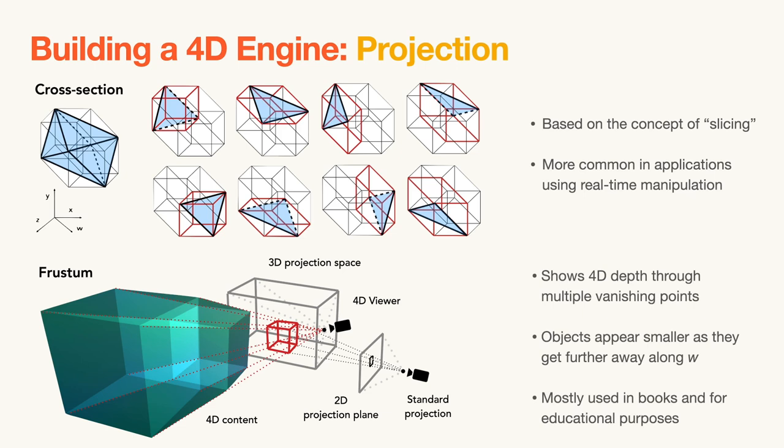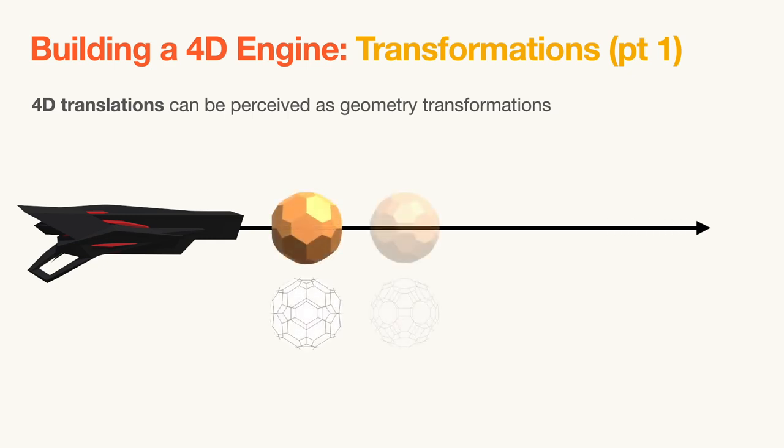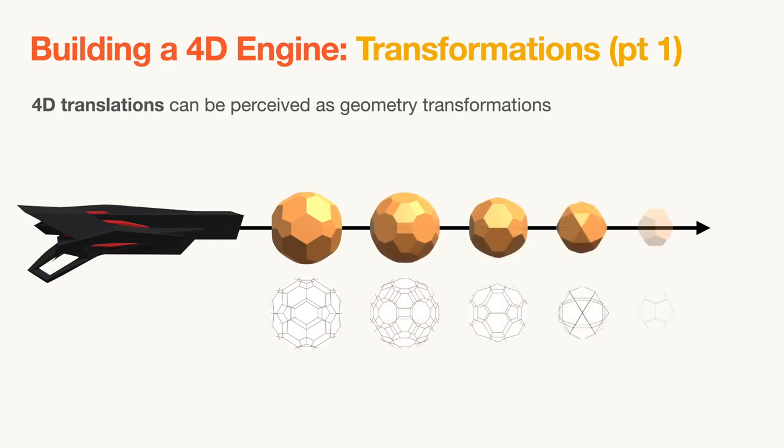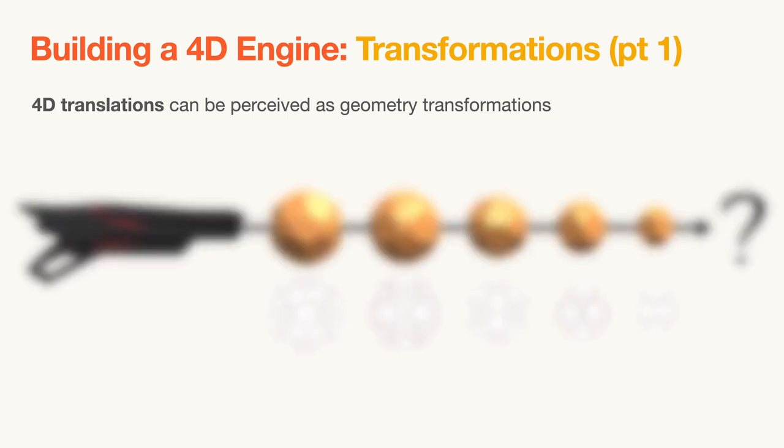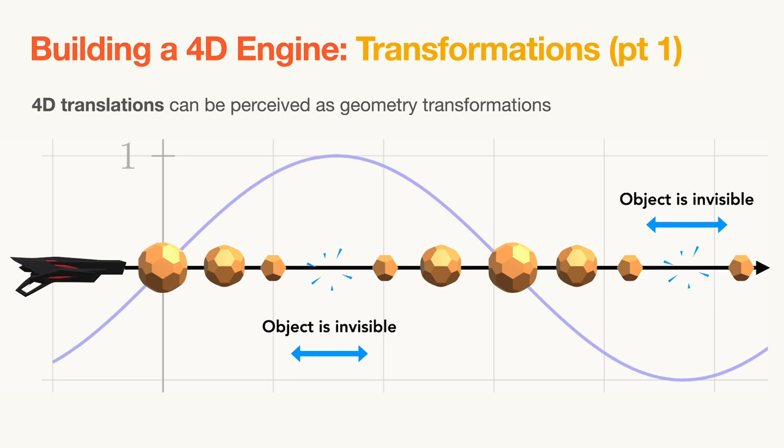While cross-section is easier to compute and is often found in interactive applications, Frustum Projection is mostly found in books about computer graphics. The next concept is 4D transformations. Let's start by imagining a 4D weapon shooting hypothetical 4D bullets with a spin that makes them sinusoidally move along the fourth dimension. As the bullet intersects the current cross-section, its geometry changes until the object exits the cross-section, with the interesting effect of making it invisible for a certain period of time. In Frustum Projection instead, the object simply becomes smaller as it gets further away from the viewer.